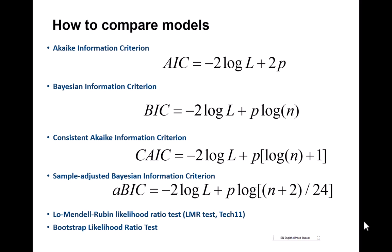and bootstrap likelihood ratio test. There have been several simulation studies comparing these. The one that has been shown to perform best is the sample-adjusted Bayesian information criteria. Noting that many of these are similar with respect that they are minus two times the log likelihood plus an adjustment